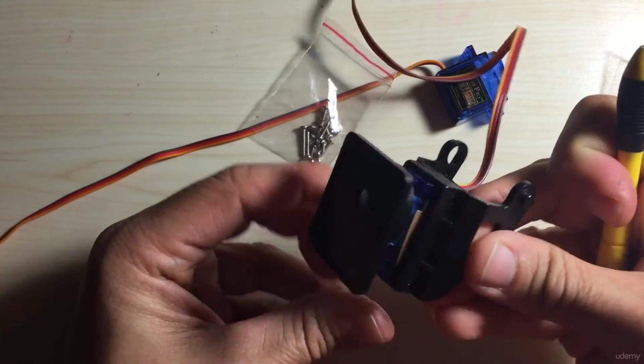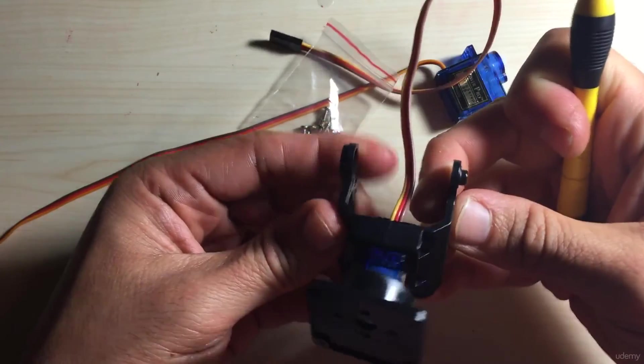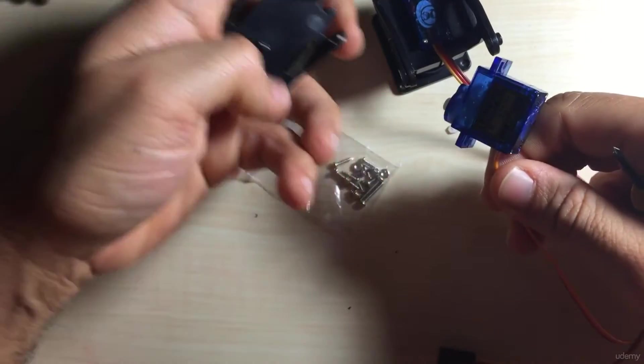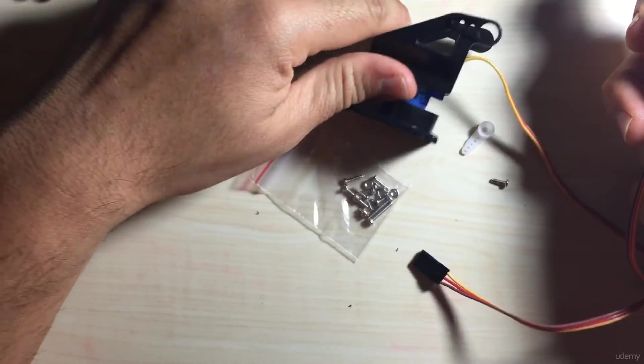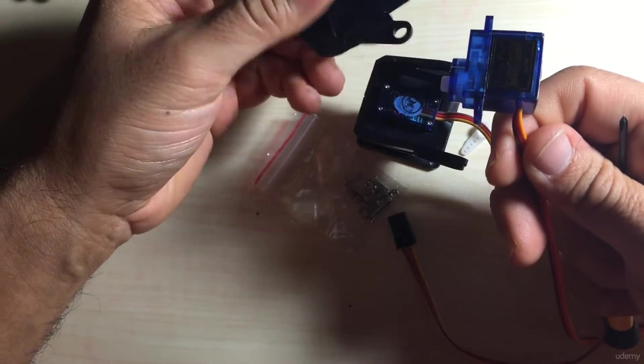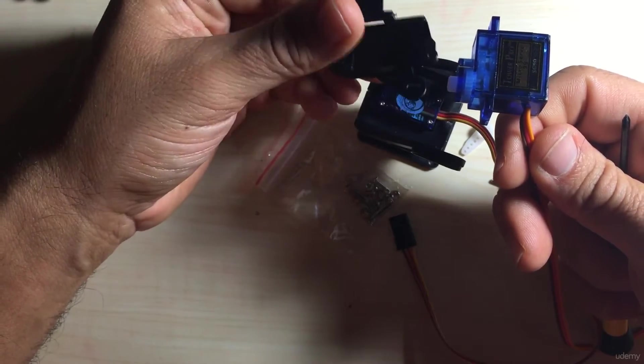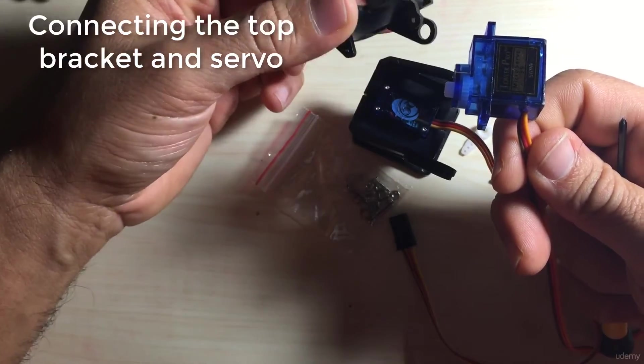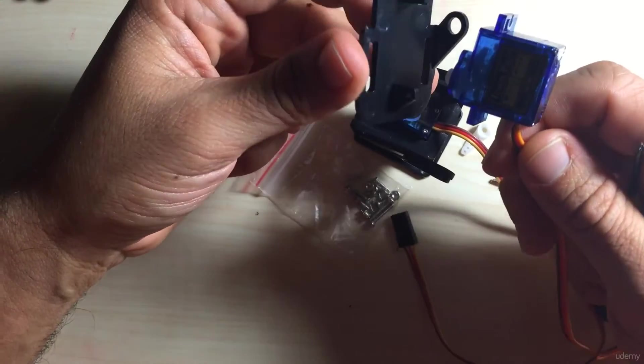All right so now that should hold our assembly in place, the base there. So next after connecting the base servo we have to connect the top servo to the actual top bracket that actually does the tilting. So this is how you have to line it up.